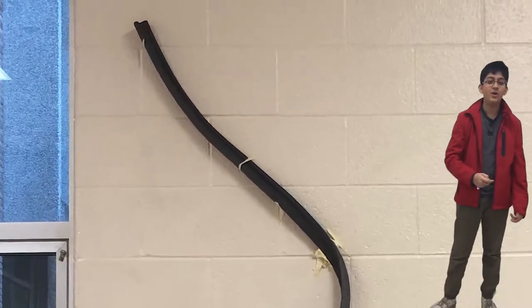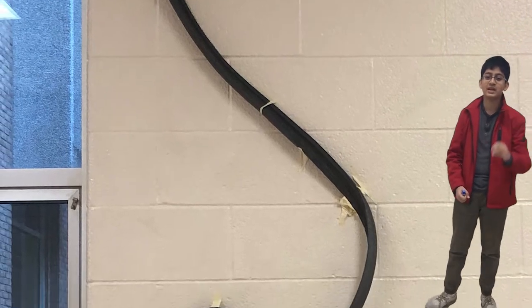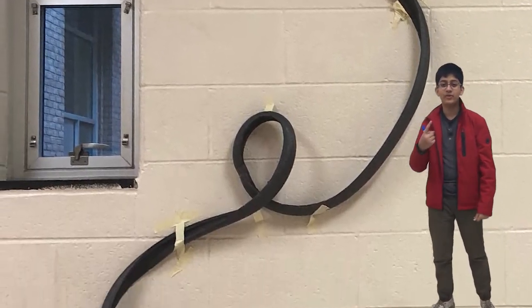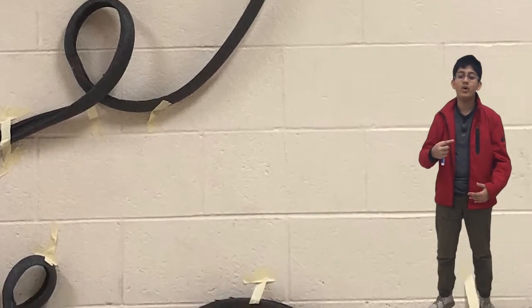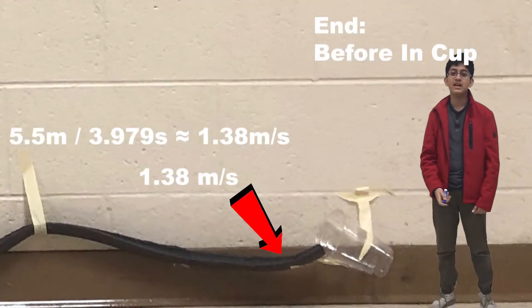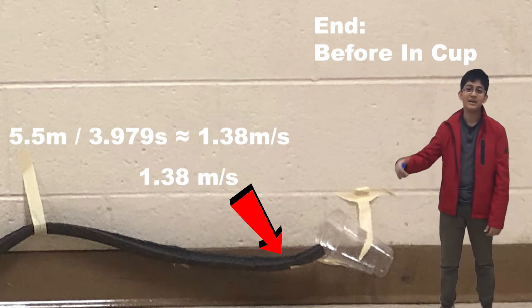Hey guys, so when the ball starts rolling, the velocity is about 0 meters per second. But when it gets down to the first loop, the velocity is higher and is at 1.71 meters per second. And towards the end, it slows down a lot and the velocity ends up at 1.38 meters per second.